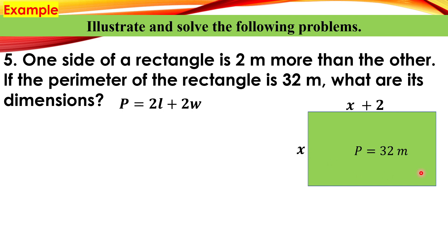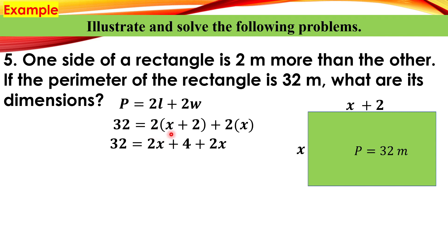The perimeter of a rectangle equals 2L plus 2W — twice the length plus twice the width. So: 32 equals 2 times (x plus 2) plus 2 times x. Expanding: 2x plus 4 plus 2x. Combining: 4x plus 4. Transposing the 4 to the other side gives minus 4, so we have 32 minus 4 equals 4x.